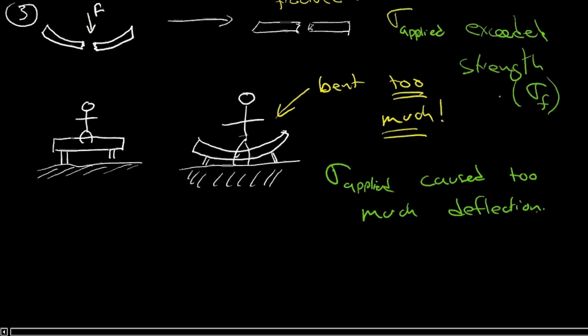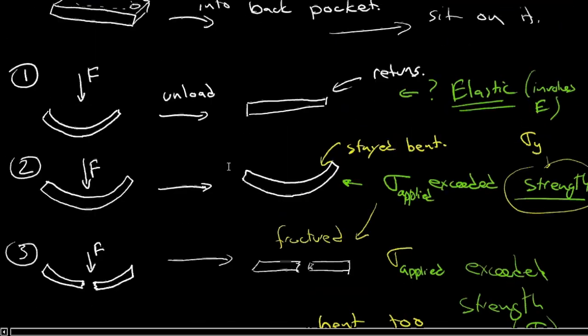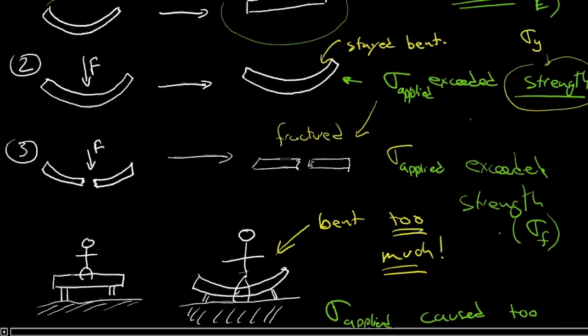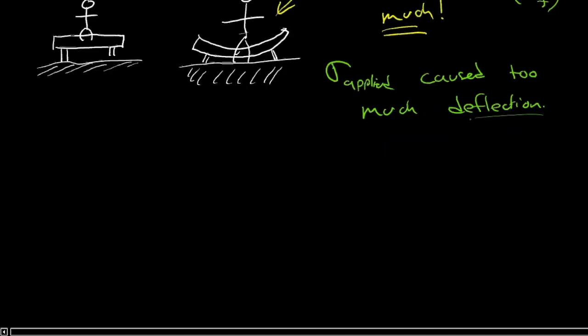Modulus is all about that deflection or elongation, depending on how it's loaded, elastically. This person gets off of that beam and it goes back to this condition. But did it bend too much? That's a concern, an issue with the modulus.